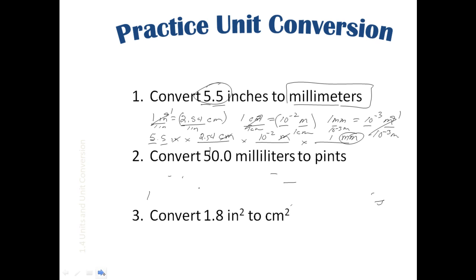The last problem is to convert 1.8 inches squared to centimeters squared. The first thing to recognize is that this is an area — like acreage, or length times width — not just a length. We know that one inch is equal to 2.54 centimeters. So we set up 1.8 inches squared times the conversion factor with one inch in the denominator and 2.54 centimeters in the numerator.